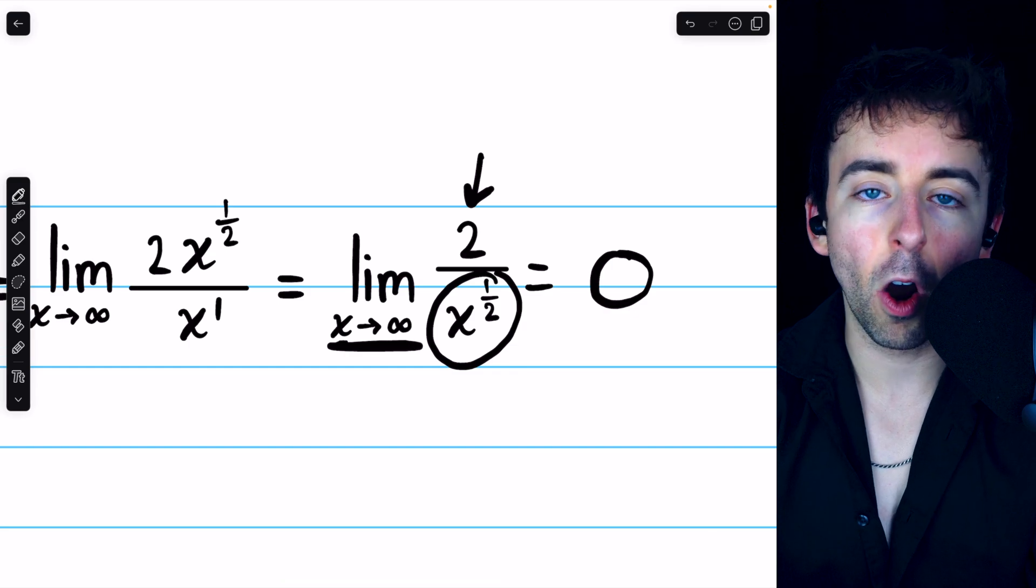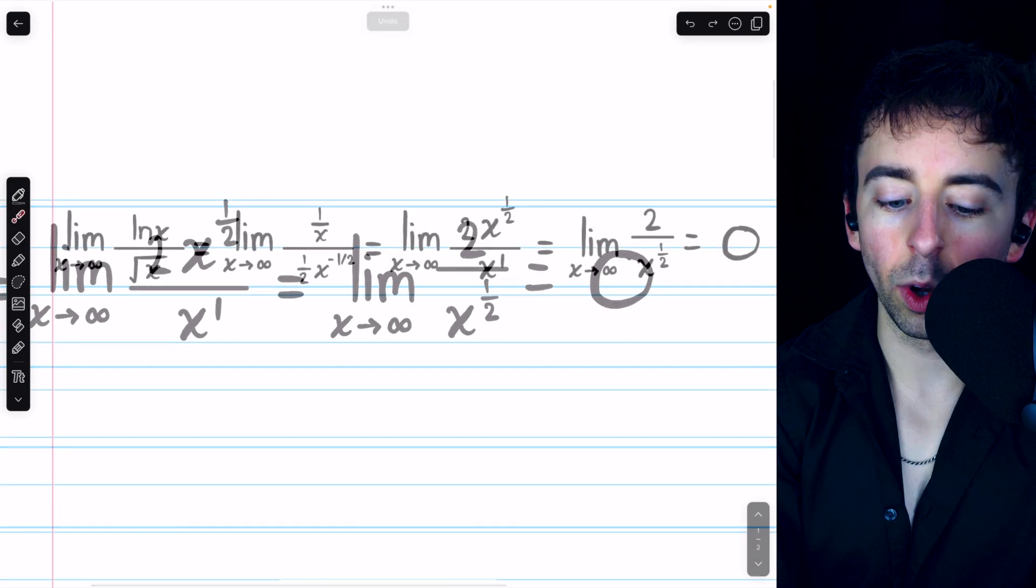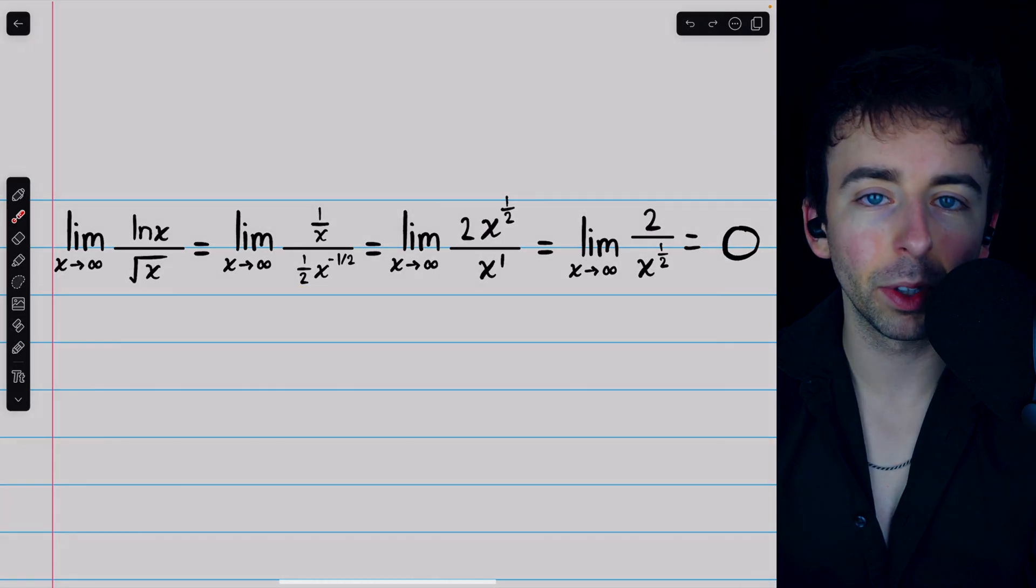Well, the denominator gets arbitrarily large, and so the limit is 0. Once more, there's all the steps we did in applying L'Hopital's rule and simplifying.